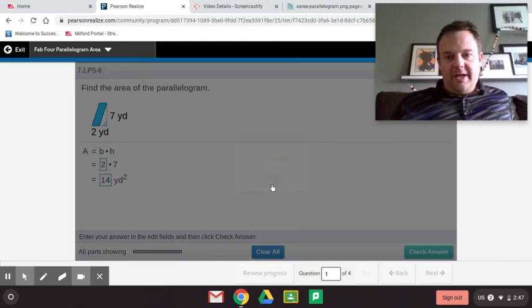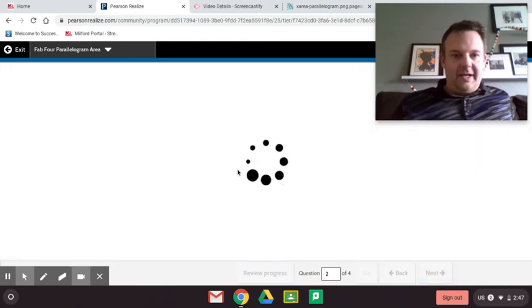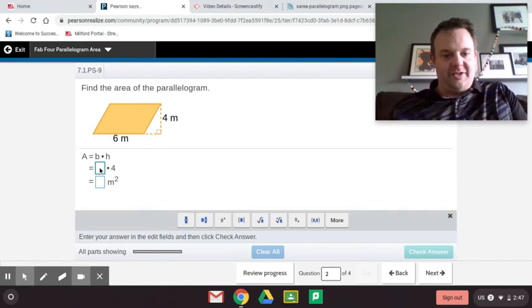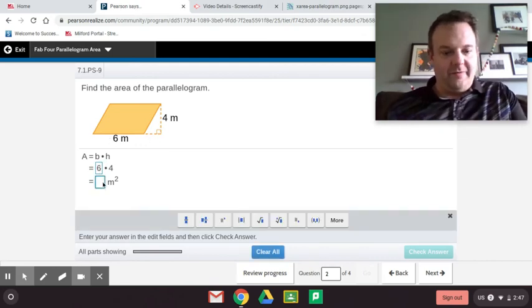So now let's go to the next one. In this one, base times height, so 6 times 4, that's 24 meters squared. Hey, we're rocking and rolling. We're going to be done with this lesson in no time at all.